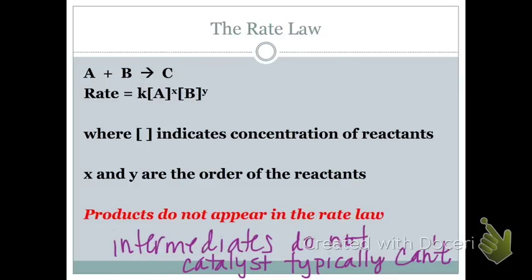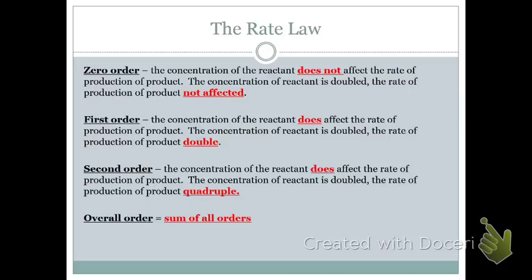We're going to be dealing with zero, first, or second order — occasionally third, but not in this course. If you double the concentration and it does not affect the rate, it's zero order. If you double the concentration and it doubles the rate, it's first order — a one-to-one relationship. If you double the concentration and the rate quadruples, that's second order.